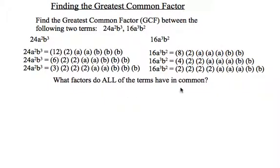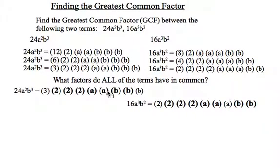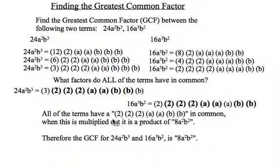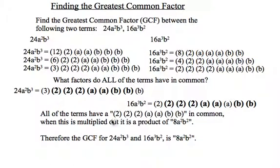So what factors do all of these terms have in common? Well, I'll bring up the 24a squared b cubed and the 16a cubed b squared all at the same time here. And you can see that they have three 2s multiplied together in common, 2 a's and 2 b's. So our greatest common factor, we can determine that by multiplying those pieces together. And when we do that, we come up with 8a squared b squared. So therefore, the greatest common factor of those three original terms is 8a squared b squared. And we can see that here.